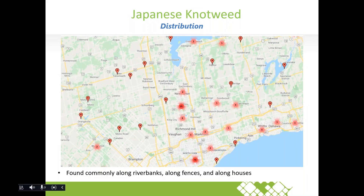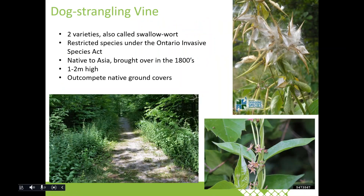This distribution map shows known reported populations — it's not a definitive list. If you don't see it on the map in your community, it doesn't mean it's not there. These are the known reported distributions throughout the York Region area. Japanese knotweed is found throughout all of Ontario, from southern to northern Ontario, and is commonly found along riverbanks, fences, and along homes.